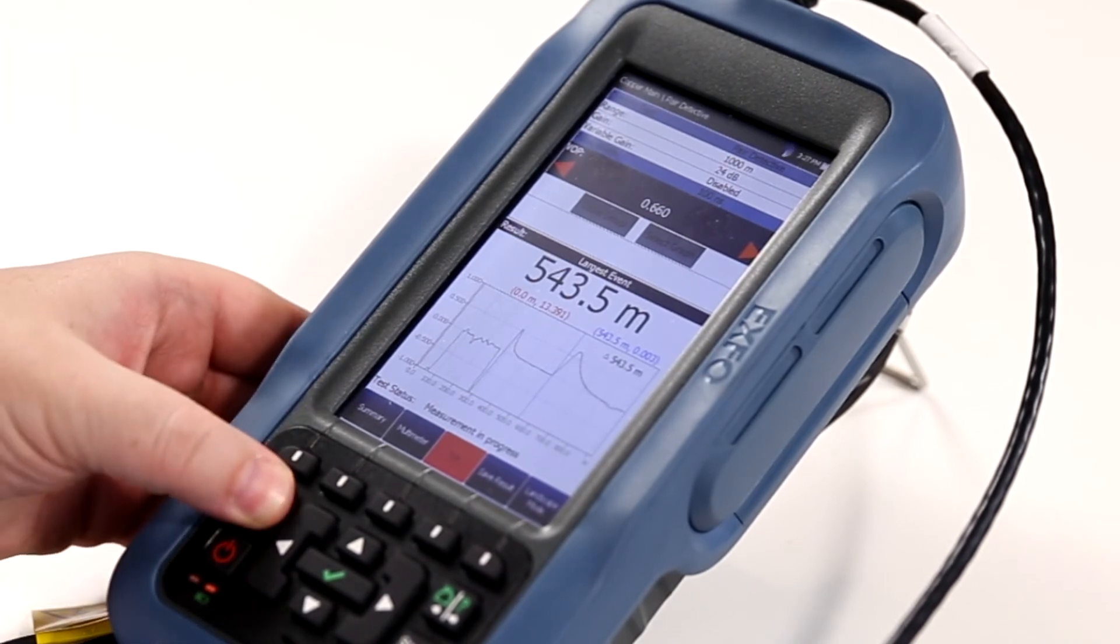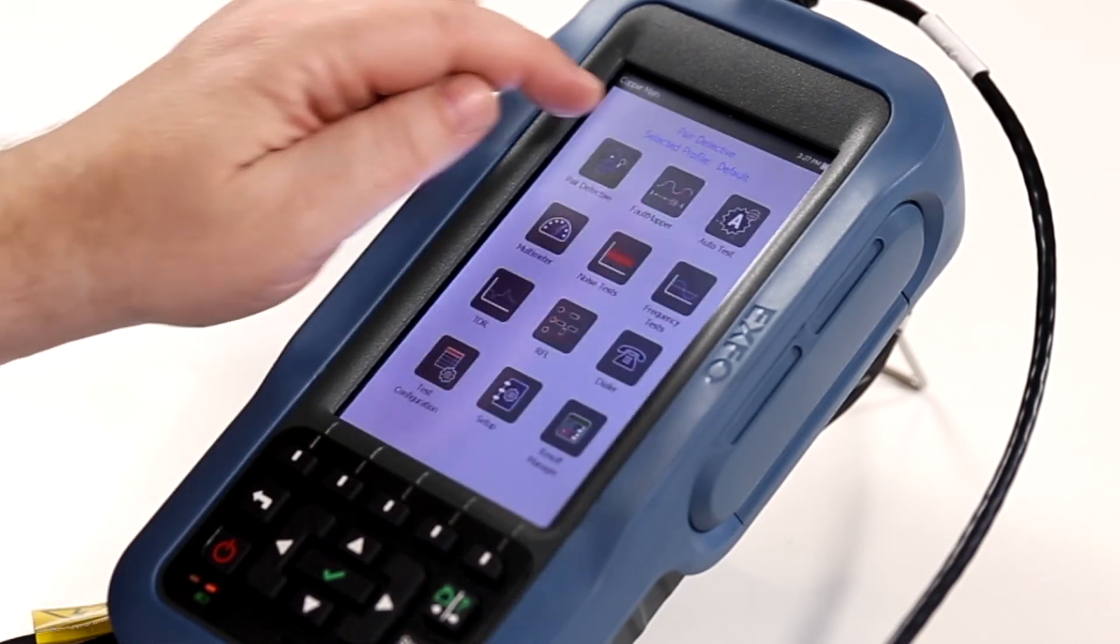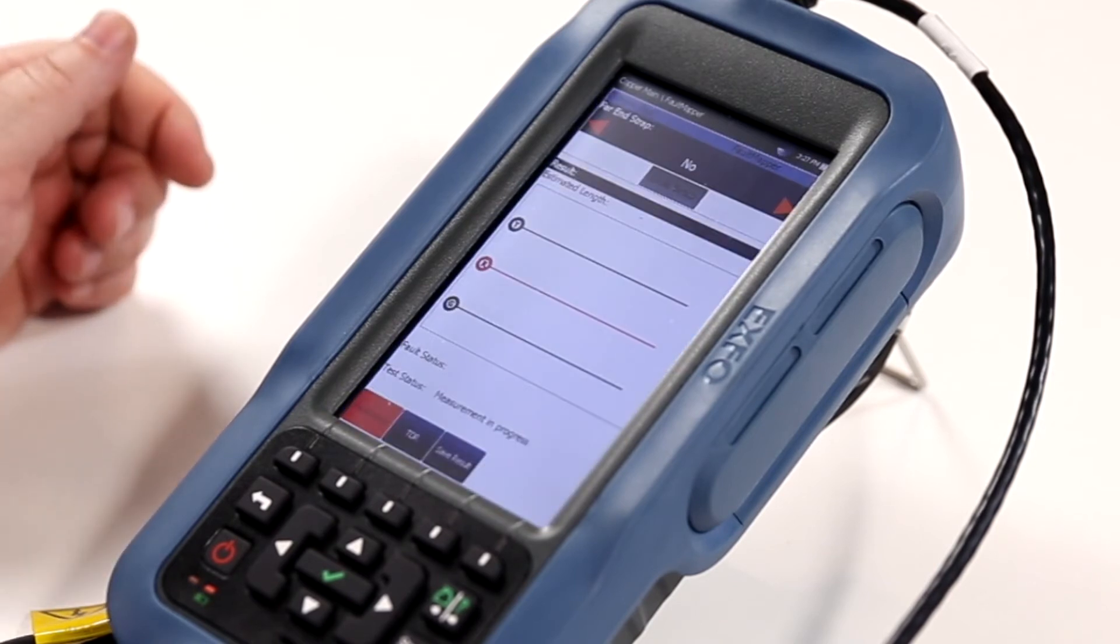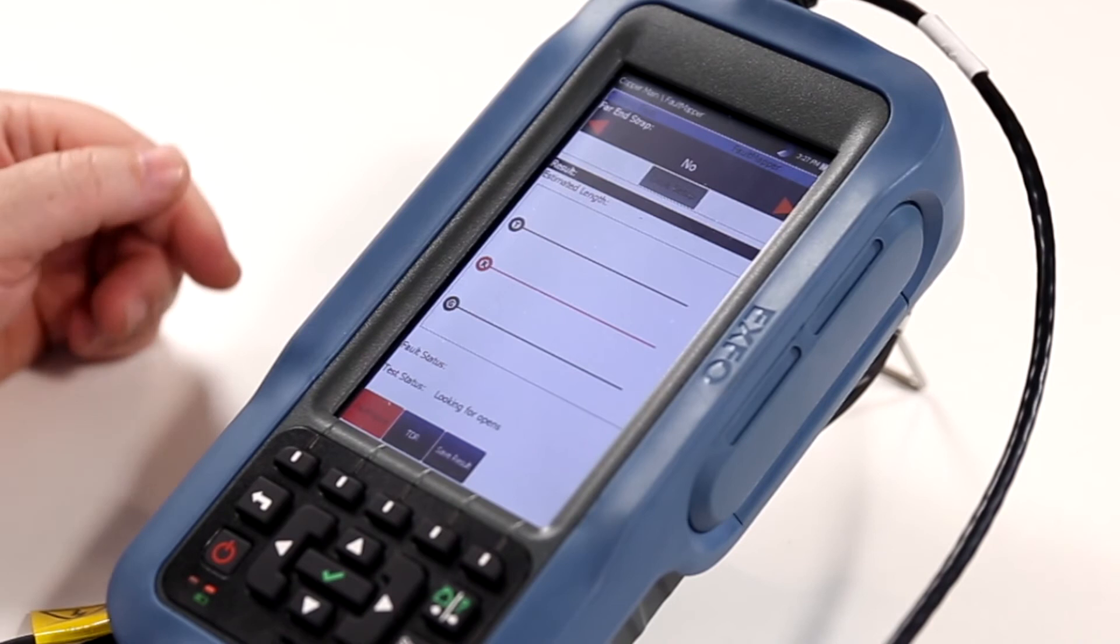If I back out of this particular test, I can now select the Fault Mapper test. The Fault Mapper test also includes the TDR capability, but it's looking for many other faults.